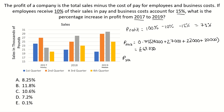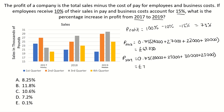Now let's do the profit for 2019. Again, our profit is 75% of the total sales, so we start with 0.75 times the sum of all four quarters. The first quarter is 20,000, plus the second quarter is 29,000, plus the third quarter is 30,000, plus the fourth quarter is 25,000. Typing that into the calculator gives us £78,000.